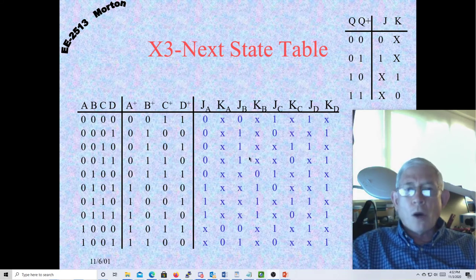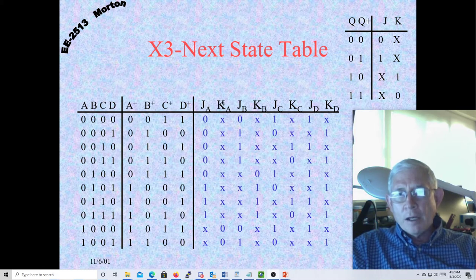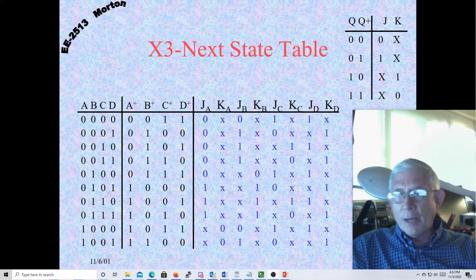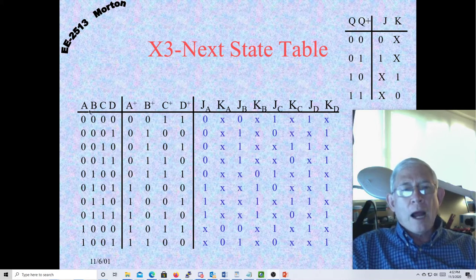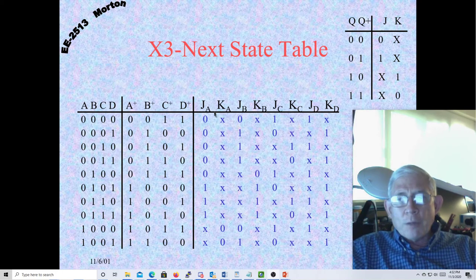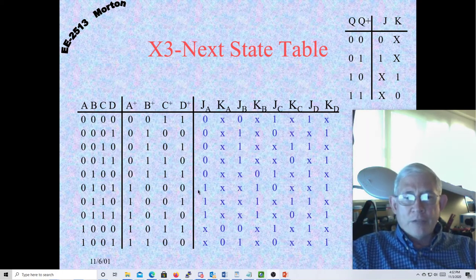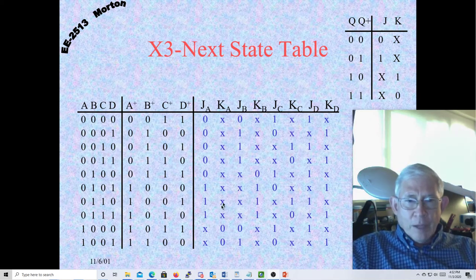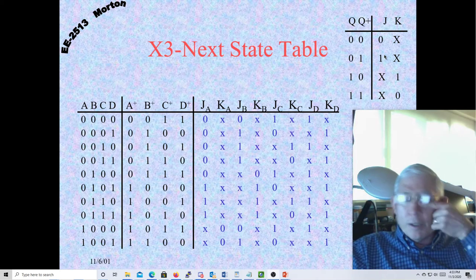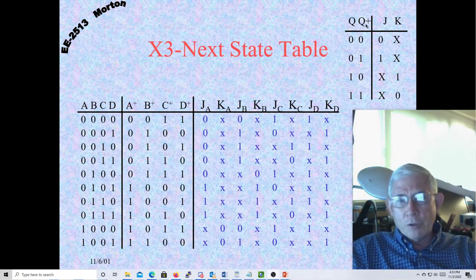Okay, so now that we have this, all we have to do is we need a KMAP for JA, a KMAP for KA, a KMAP for JB, a KMAP for KB, and so forth. Now, the question you should ask yourself, what are the independent variables for our KMAP? Well, the independent variables are our current states of A, B, C, D, our present state. There's no input, so we don't have any x's for the input to deal with. So we just have A, B, C, D. So we should have a four-variable KMAP, which means we need 16 values to put in there. Well, we have 10 here, and then the six don't cares.